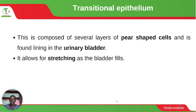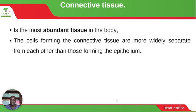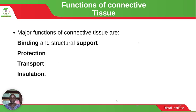Connective tissue is the most abundant tissue in the body. The cells forming the connective tissue are more widely separated from each other than those forming the epithelium. The functions of connective tissue include binding, structural support, protection, transport and insulation.